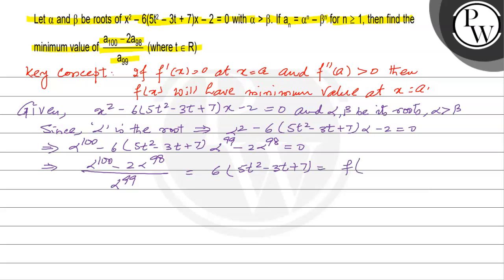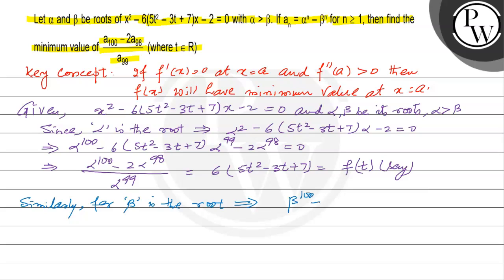Let us call that expression f(t). Similarly, since beta is also a root, we can write the same for beta: beta to the power 100 minus 2 times beta to the power 98, over beta to the power 99, equals 6 times (5t squared minus 3t plus 7).